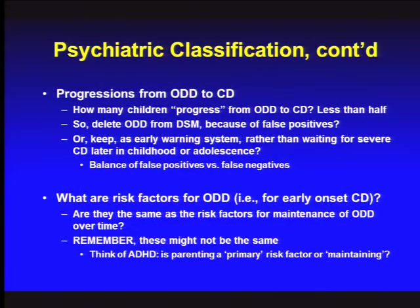How many kids who meet criteria for ODD actually go on to have a much more aggressive conduct disorder a few years later? If it's only 10%, why keep ODD in the DSM — it's over-labeling kids who will start to adjust. But if it's a much higher percentage, we'd better have ODD in there because we don't want to wait until the kids are already on their way to juvenile hall before we identify them.